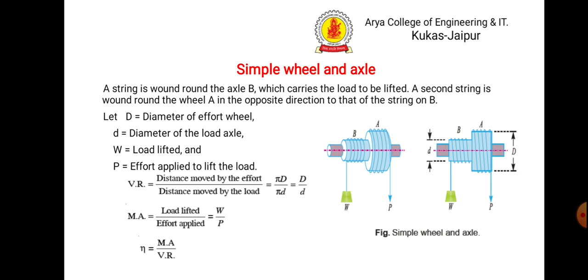The velocity ratio is distance moved by effort — that is π×D — to distance moved by the load — that is π×d. So velocity ratio equals capital D divided by small d, the ratio of diameter of effort wheel to diameter of load axle. Mechanical advantage is W/P, and efficiency is mechanical advantage divided by velocity ratio.